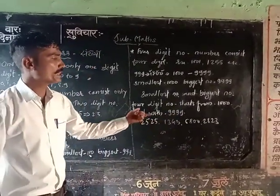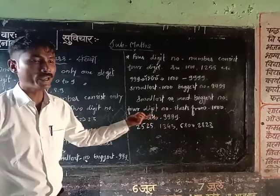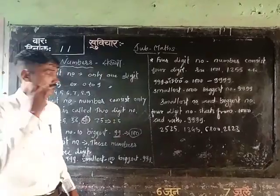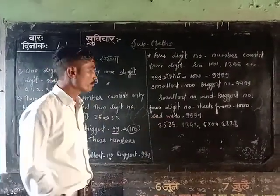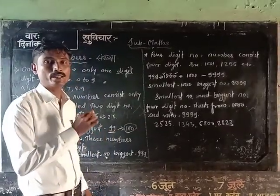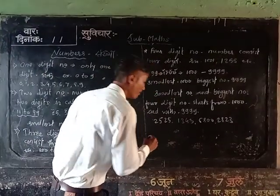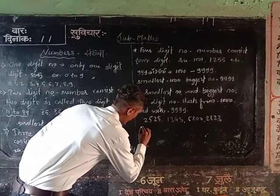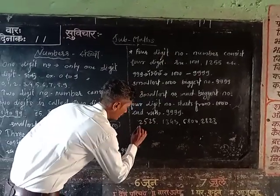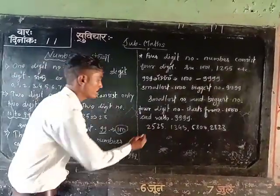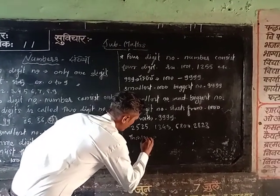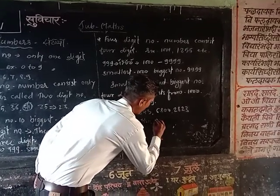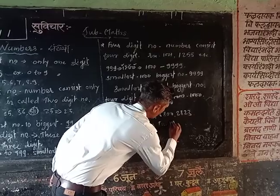Which number is the biggest and which is the smallest? We can identify this by thinking about the place values. Last year we studied place values — there are many places. For a 4-digit number, the places are: thousands, hundreds, tens, and units.